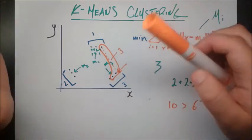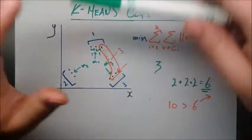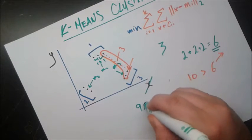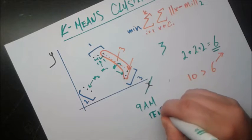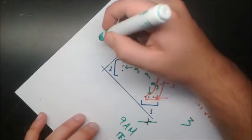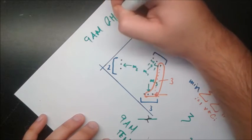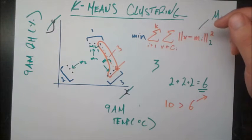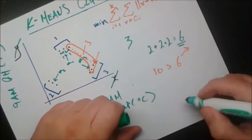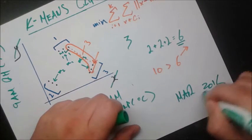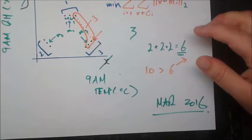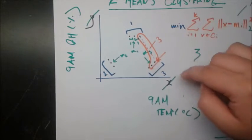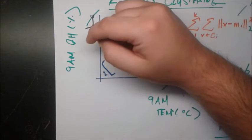Now, enough with the mathematical framework — let's go into the application. We're going to rename the variables: x is going to be 9 a.m. temperature in Celsius, and y is going to be 9 a.m. relative humidity in percentage. You can find this data on the Australian Weather Data website. We're looking at March 2016, with columns for 9 a.m. temperature, 3 p.m. temperature, 9 a.m. relative humidity, 3 p.m. relative humidity, wind speed, maximum wind gust, and more.